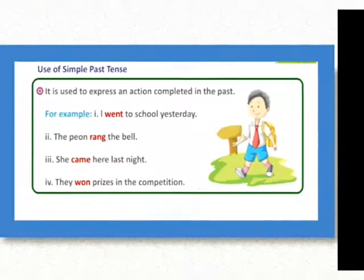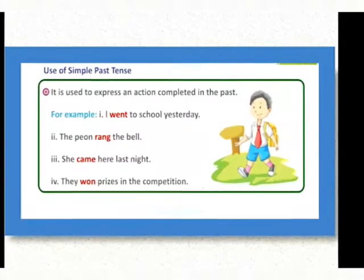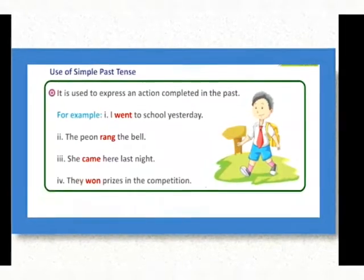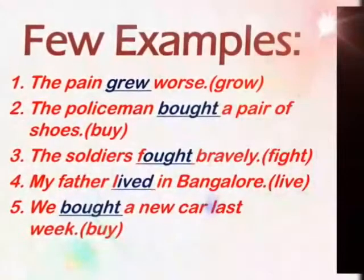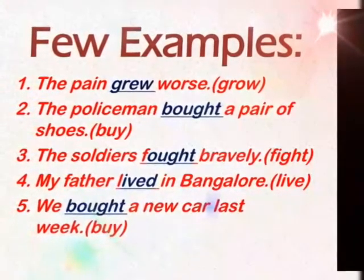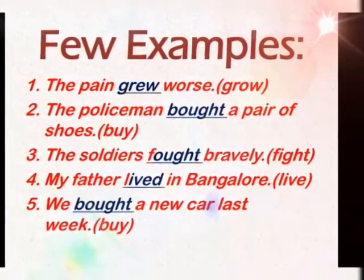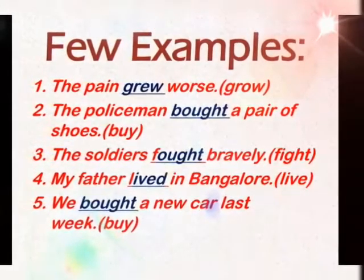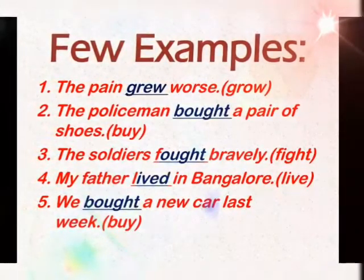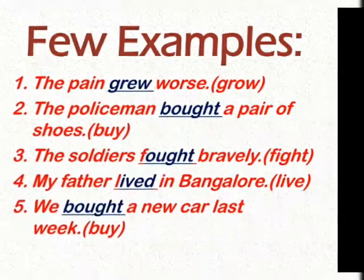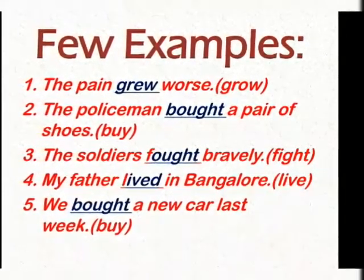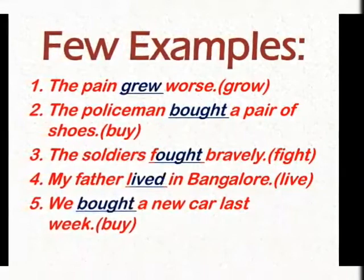The common similarity and the golden rule of simple past tense is that we put the second form of the verb. More examples: 'The pain grew worse' — 'grew' is the second form of 'grow.' 'The policeman bought a pair of shoes' — 'bought' is the second form of 'buy.' 'The soldiers fought bravely' — 'fought' is the second form of 'fight.' 'My father lived in Bangalore' — 'lived' is the second form of 'live.' 'We bought a new car last week' — 'bought' is the second form of 'buy.'